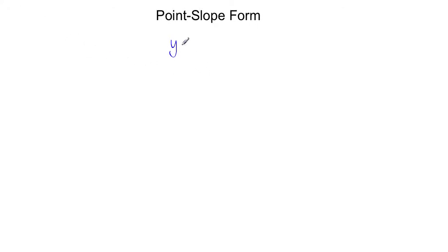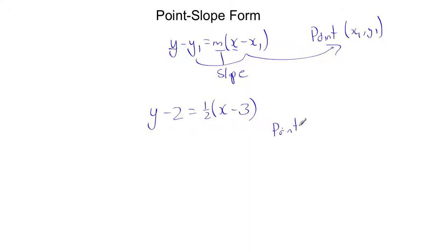Now point-slope form looks like this. It's y minus y₁ is equal to m times x minus x₁. This takes a point, x₁, y₁. This is a constant. These are constant values, whereas the x and the y are variables. So again, m is the slope, and the x and the y values are constant points. So if I have something such as y minus 2 is equal to 1/2 x minus 3, I can see that the point here is 3 comma 2. So here, this goes through the point 3 comma 2. Now, why might this be a benefit?